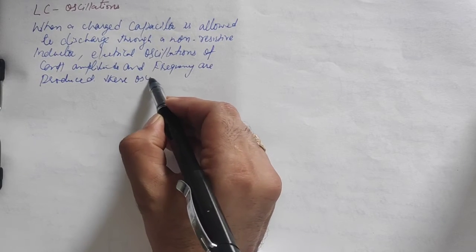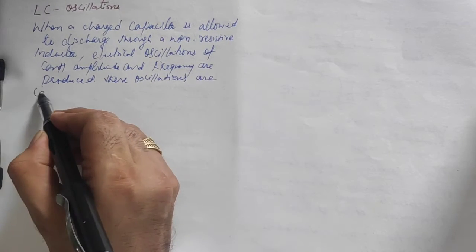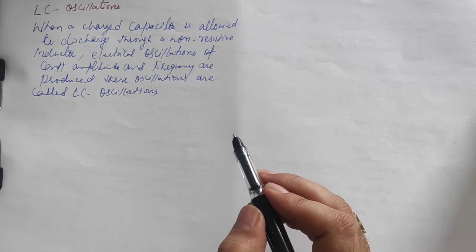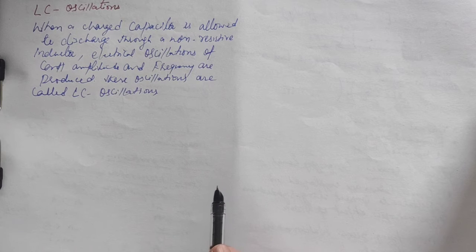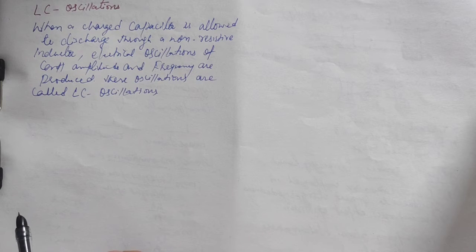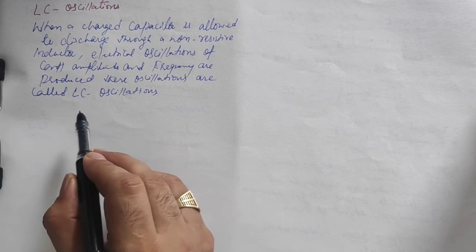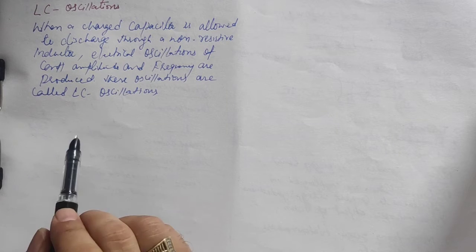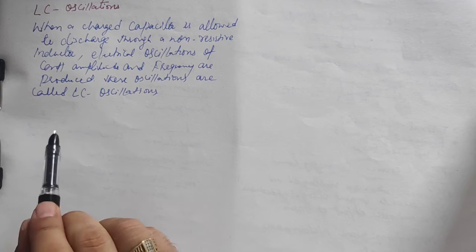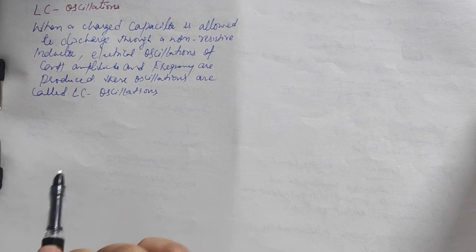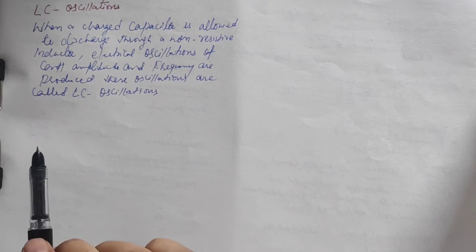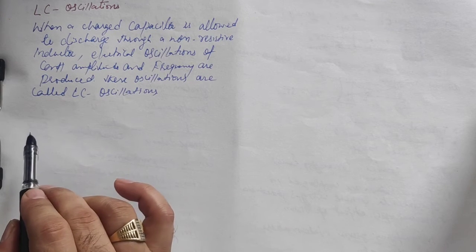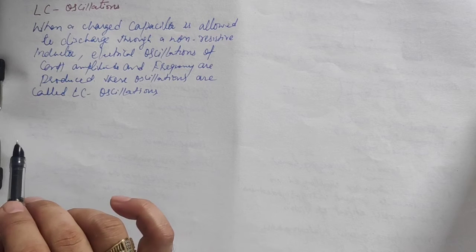These oscillations are called LC oscillations. I'll make eight diagrams here, and through these diagrams we will discuss the qualitative explanation. If you haven't subscribed yet, please subscribe. The energy stored in an inductor and capacitor formulas we discussed earlier will be useful here.